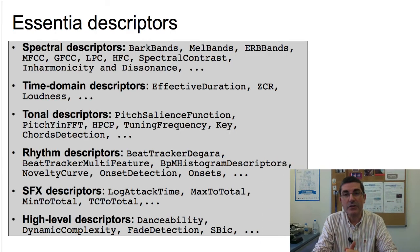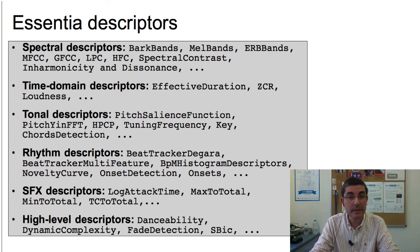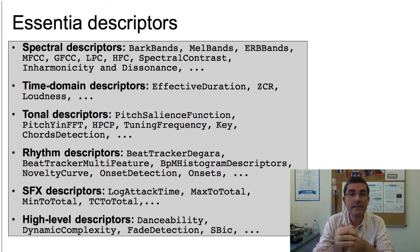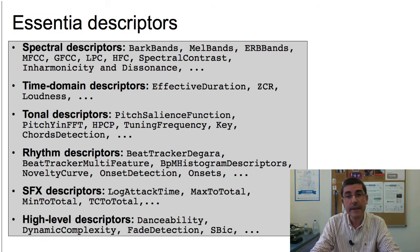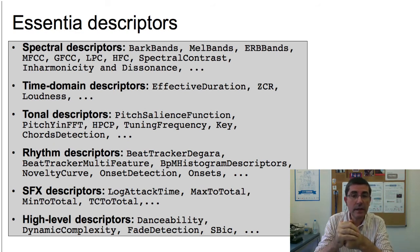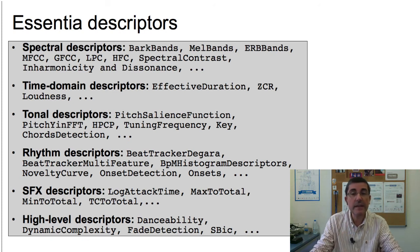There are many types of features that can be extracted from audio signals, and many algorithms implementing their extraction. In this class we will use Essentia as the software tool. Essentia is an open source library for audio analysis, developed and maintained at the music technology group in Barcelona, that contains algorithms for a large set of music descriptions. In the programming lectures we will explain how to use it.